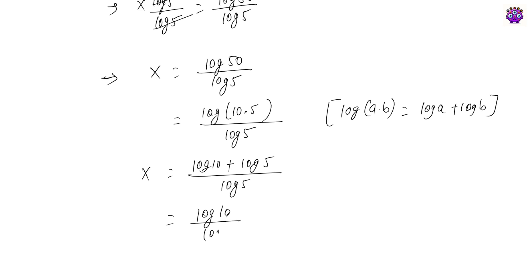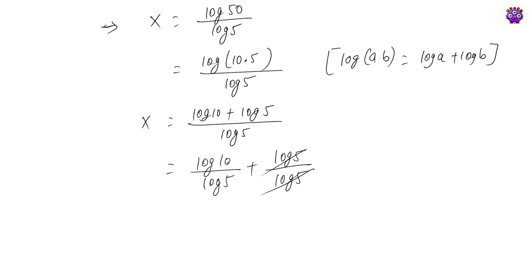We'll get log 10 over log 5 plus log 5 over log 5. This will get cancelled, and we know that log 10 is equal to 1. So that is 1 over log 5 plus 1.